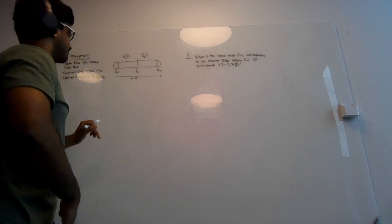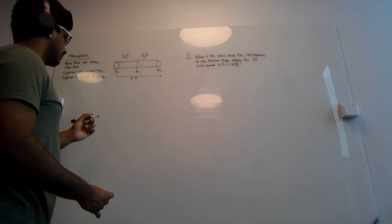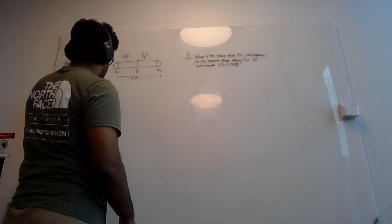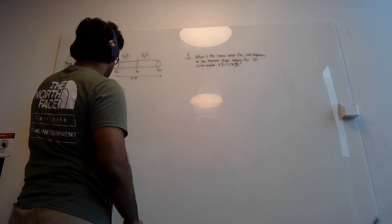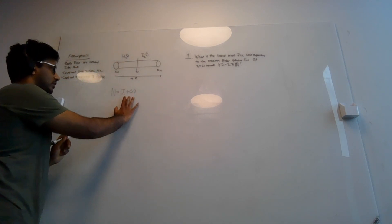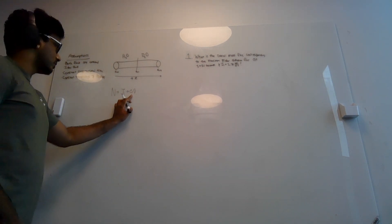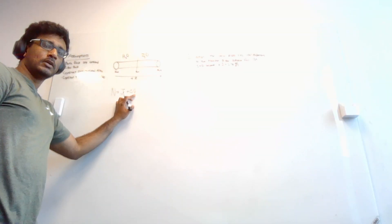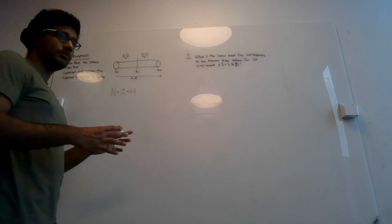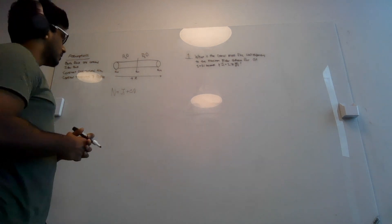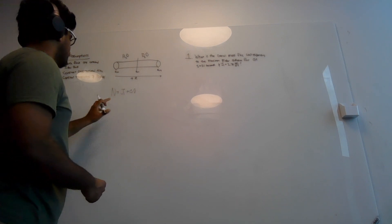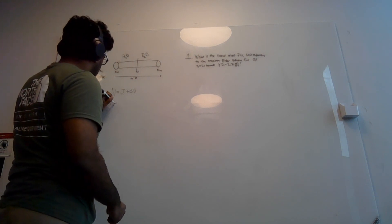To start this problem we consider the total molar flux equation: N equals the molar diffusive flux plus the molar concentration times the average molar velocity. Looking at the second term — molar concentration multiplied by average molar velocity — we conclude this equals zero because the capillary tube is closed, meaning there is no change in velocity and the velocity is zero.